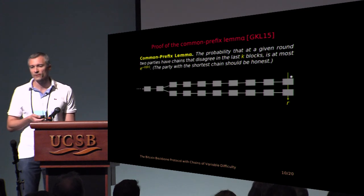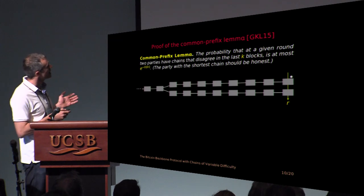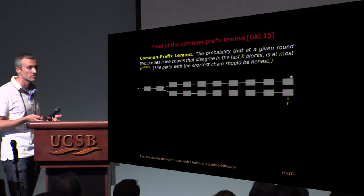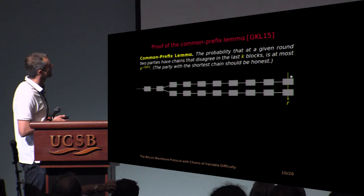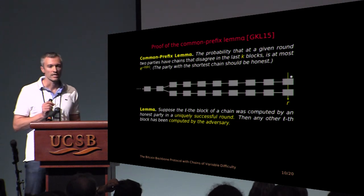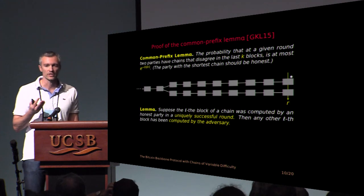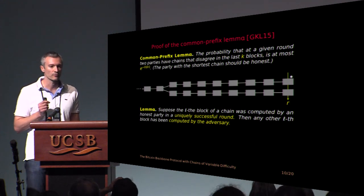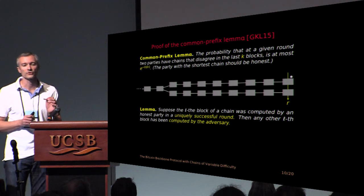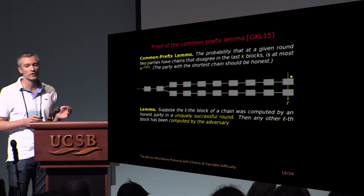So now let me review the proof of the common prefix property in the static case, where I have a fixed number of parties. As we've seen what we don't want, we don't want large forks. So here is a large fork. And let's see what bad things this fork implies, what bad events. So the key observation is that if some block is computed at a uniquely successful round, so at every round the parties engage in those Bernoulli trials, if at a round exactly one honest party computes a block, then we call this round uniquely successful. So the observation is that if, say, the fifth block is computed at such a round, a uniquely successful round, then any other fifth block in any other chain should have been computed by the adversary.